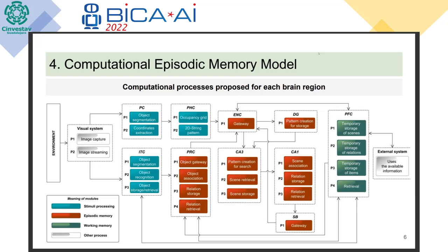Then we move to the parietal cortex. The parietal cortex helps with stimuli processing — it takes the information from the environment and performs segmentation. It helps us identify the number of objects, their location, and values like X and Y coordinates measured from the center of the image.